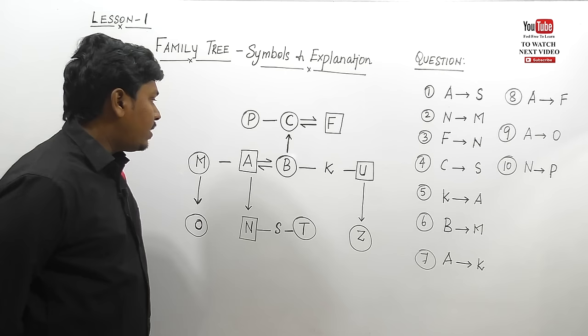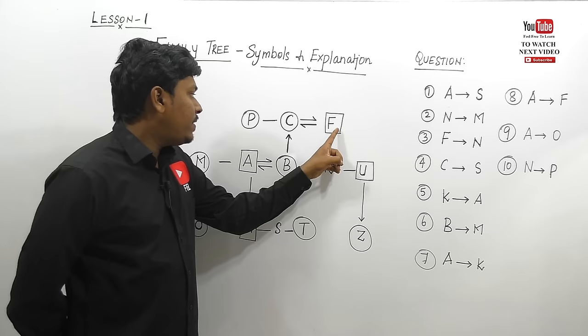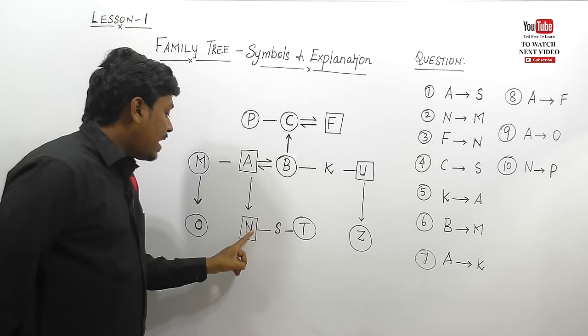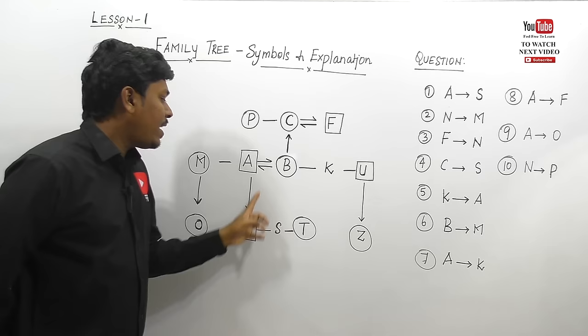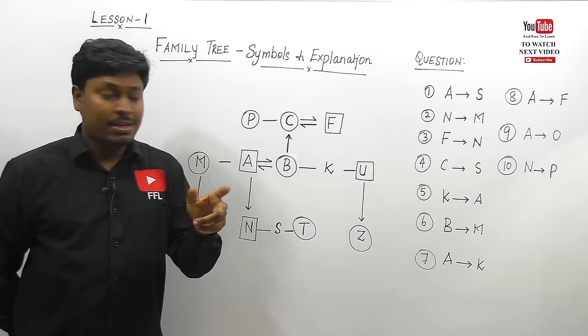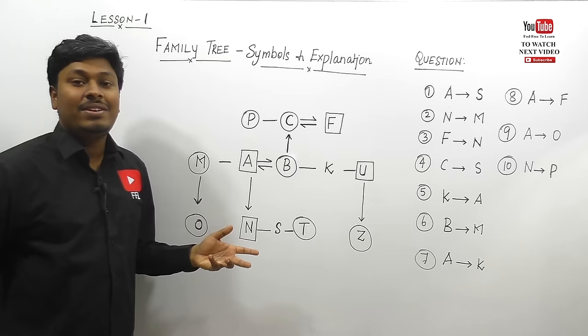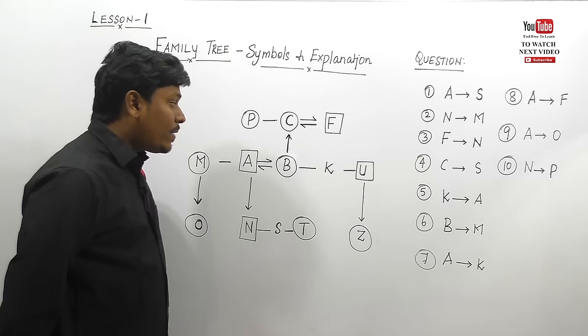Question 3: F to N — from F, what is the relation of N? F's daughter is B, and B is having a son N. Daughter's son means two arrows — that denotes grandson or granddaughter. Since N is a male person, the answer is grandson.